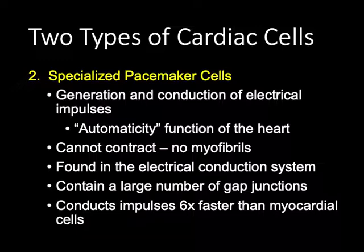The other type, especially relevant to ECG interpretation, is pacemaker cells — the conductivity agents of the heart. These cells generate and conduct electrical impulses; this is the automaticity function that drives our heartbeat and often drives dysrhythmias as well. They do not contract and have no myofibrils. They make up only about 1% of cardiac cells and are found along the electrical conduction pathways. They have a large number of gap junctions and conduct impulses six times faster than muscle cells, which is essential for rapidly transmitting electricity from the top of the heart to the bottom to trigger an upward contraction.